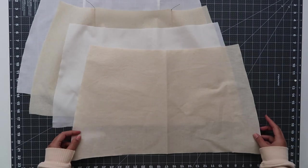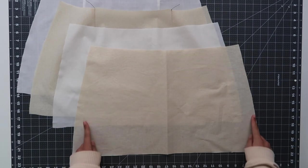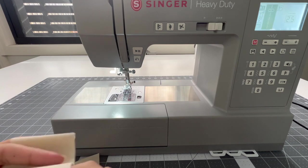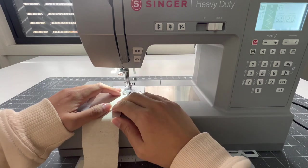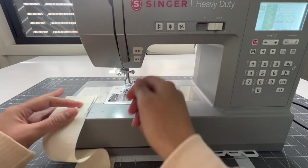So with the darts done we're now going to clean up the sides of our sewing pattern pieces. Usually here this is where you would overlock or serge those side pieces but obviously we're assuming that you only have one machine.